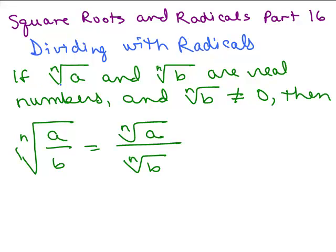Here's the definition. If the nth root of a and the nth root of b are real numbers and the nth root of b is not equal to 0, then the nth root of the quotient a over b is equal to nth root of a over the nth root of b.